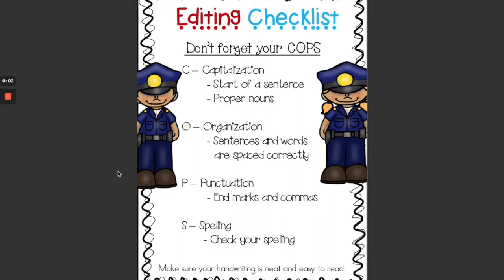All righty, boys and girls, today we are going to learn a way to edit our writing. When we edit our writing, what we're really doing is reading through our work, and then we are changing or fixing any mistakes so that when we rewrite it, we write it even better than the first time. But we need to know what to check for and what mistakes we're trying to find to fix.